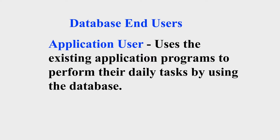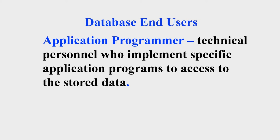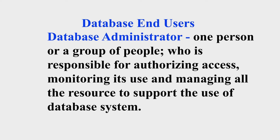Now that we know the definition of a database, let us see what kind of users are involved within a database management system. First, we have the application user — this is an end user who is not sophisticated or technical, and uses the existing application program to perform their daily tasks using the database. Another user is the application programmer, a technical user whose function is to implement specific application programs to access the database. Another user is the database administrator, which could be an individual or a group of people responsible for authorizing access, monitoring use, and managing all the resources that support the use of a database system.